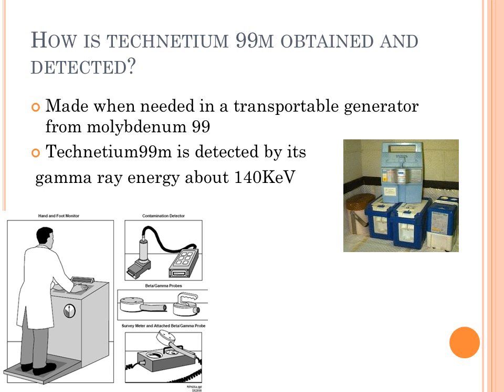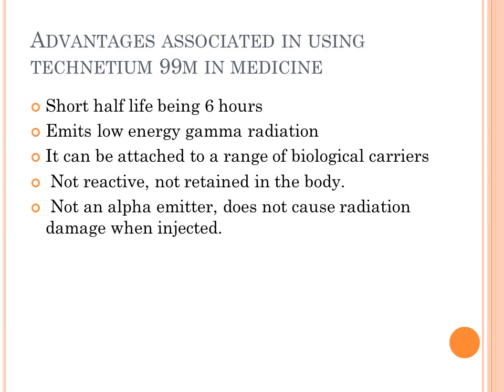Although technetium-99M sounds great, and it really is, there are always advantages and disadvantages, as there are with all radioisotopes, and we must always have a balance of both. The advantages of technetium-99M in medicine are that it includes a short half-life of 6 hours, which is long enough for medical investigation and short enough to minimize the patient's exposure to radiation. Technetium-99M emits low gamma energy radiation and can be attached to a range of biological carriers, and hence can concentrate in a number of different tissues and organs. It is not an alpha emitter, so it does not cause radiation damage when injected.